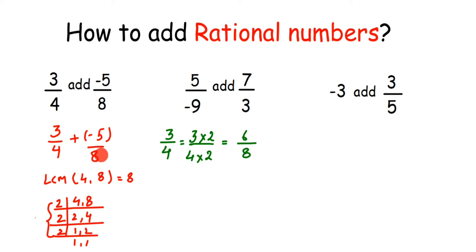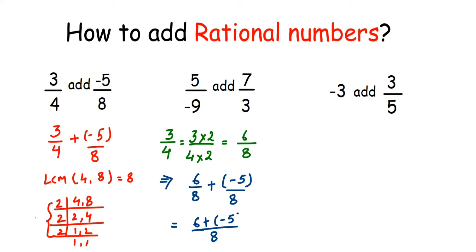The second number already has 8 in the denominator, so I am going to add them. In place of 3 by 4 I will take 6 by 8, so that is 6 by 8 plus minus 5 by 8. Now the denominators are the same. We add the numerators keeping the denominator the same: denominator stays 8, numerators give us 6 plus minus 5. Since we are adding integers of opposite sign — 6 is positive, 5 is negative — we subtract: 6 minus 5 is 1. The sign of the greater number, 6, is positive. So the answer is 1 by 8.